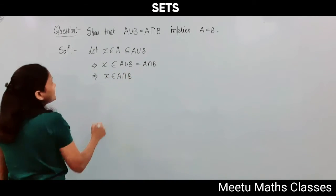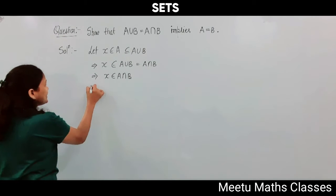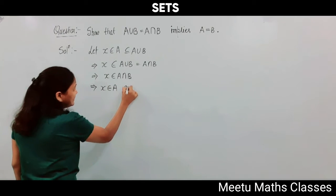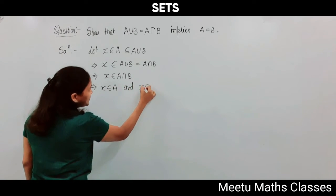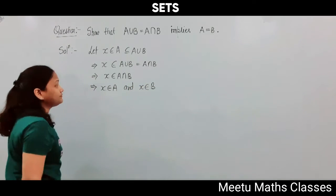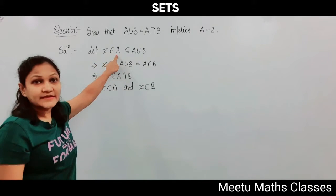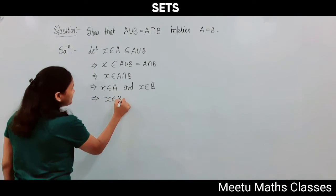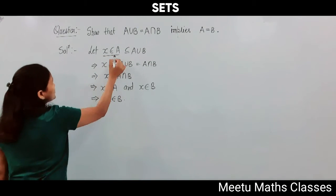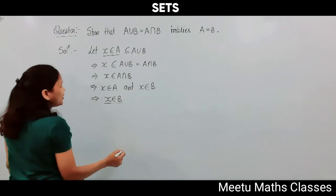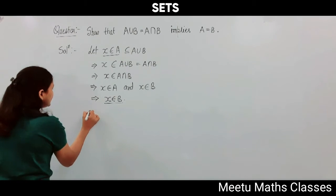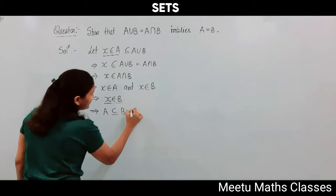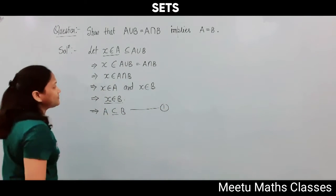Since X belongs to A intersection B and X already belongs to A, that means X belongs to B. So A is a subset of B. Let us take this as the first statement.